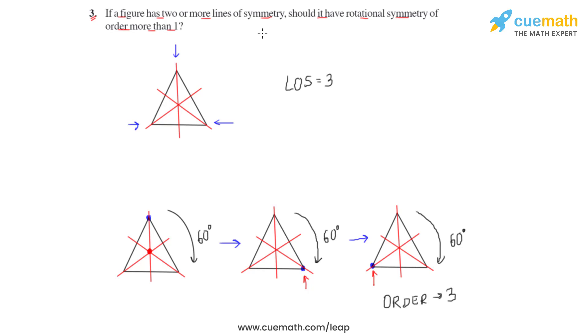We can definitely prove that if there is a figure with two or more lines of symmetry, it should have a rotational symmetry which is more than order of 1. This is how we are going to answer question number 3.